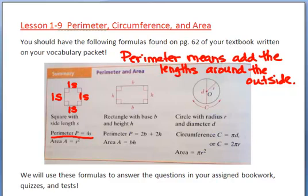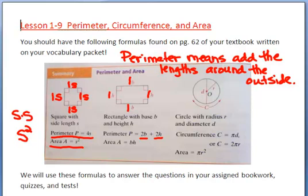Area of a square or rectangle is length times width, or we use base times height. So we're doing S times S, which in algebra is S squared — that's why the area of a square is S squared. A rectangle has two heights and two bases, so the perimeter is 2B plus 2H, and the area formula is base times height.